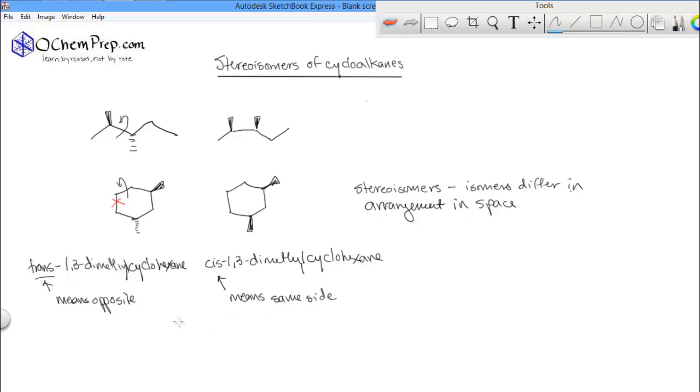So a couple things. Trans means one up and one down. And we're going to use this later when we talk about chairs and conformational isomers of cyclohexane. Cis means either both up or both down.